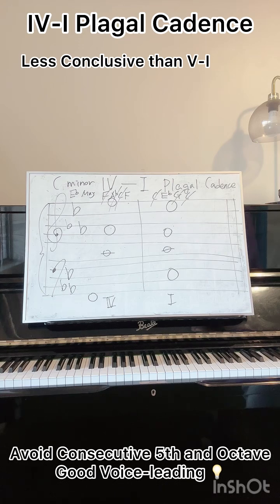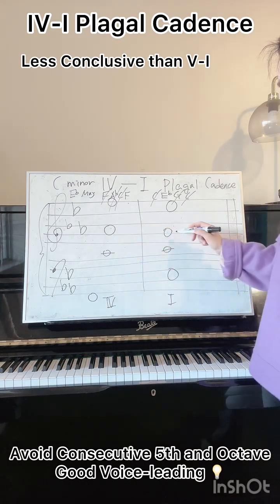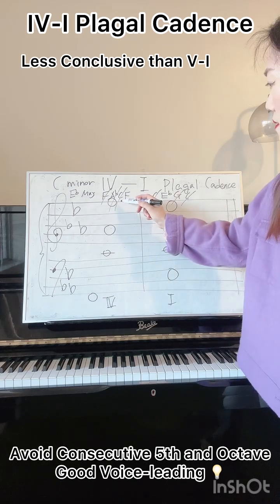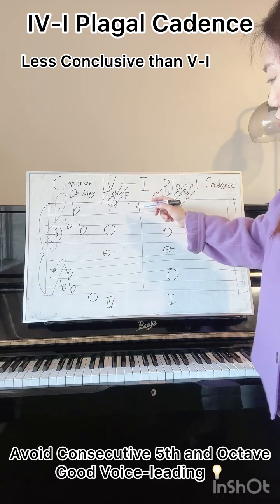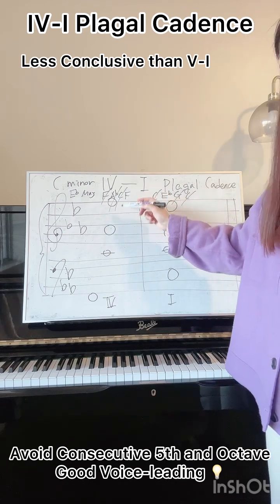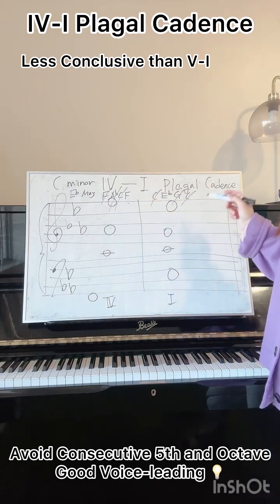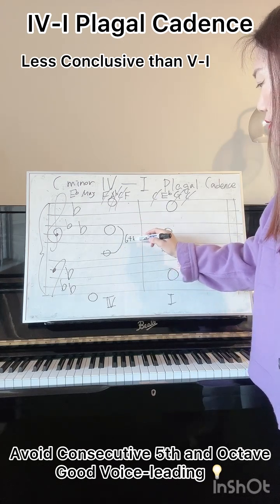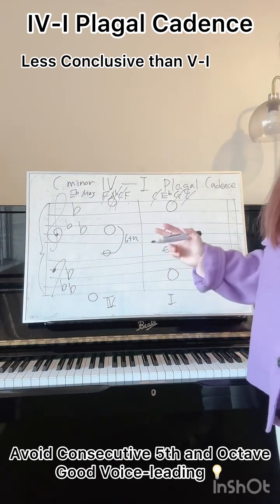Let's try to find if there's any consecutive fifth and octave. This interval is a sixth, followed by a fifth. You have to make sure that you check carefully if there's any consecutive fifth and octave. So this one is a sixth followed by a fifth — so it's okay.